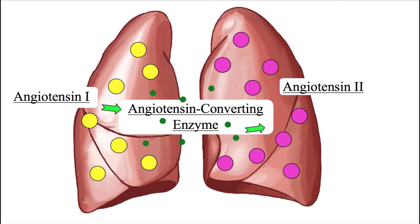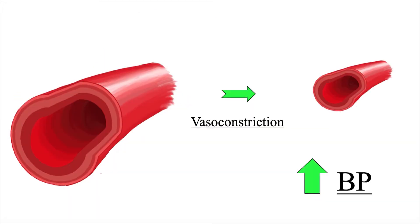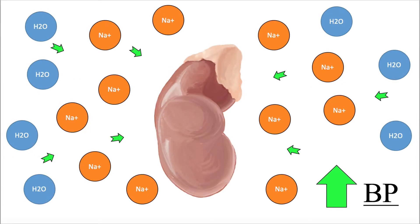Angiotensin-1 travels to the lungs, where it is converted into angiotensin-2 by the angiotensin-converting enzyme. The activation of angiotensin-2 has several results. First, it causes vasoconstriction, which increases blood pressure. Second, angiotensin-2 increases sodium reabsorption by the kidneys, causing water retention, which increases extracellular fluid volume and thus raises blood pressure.